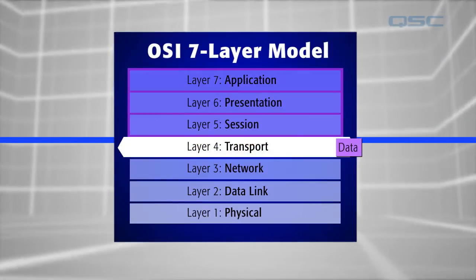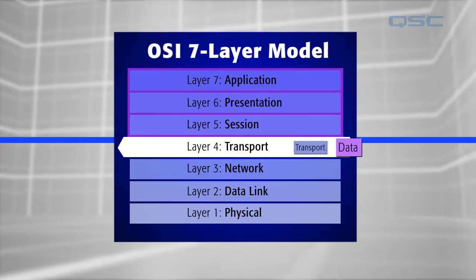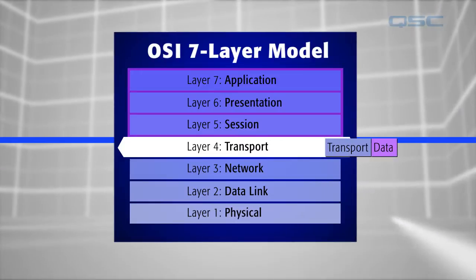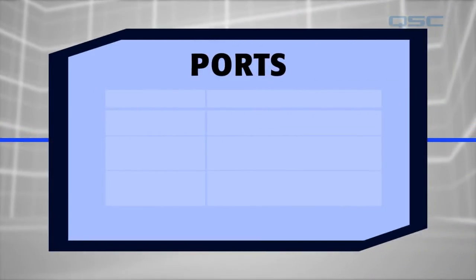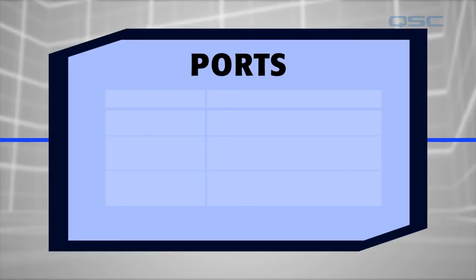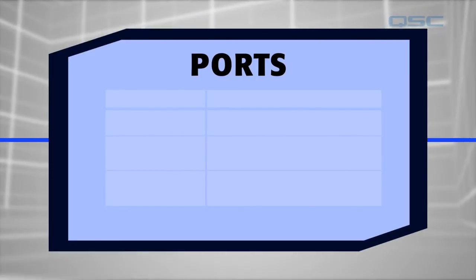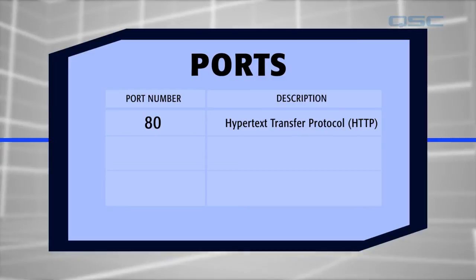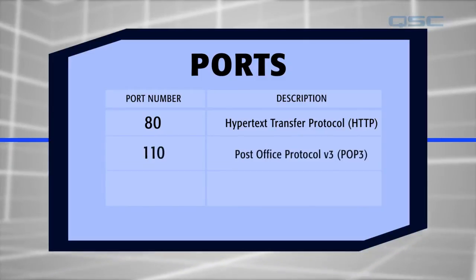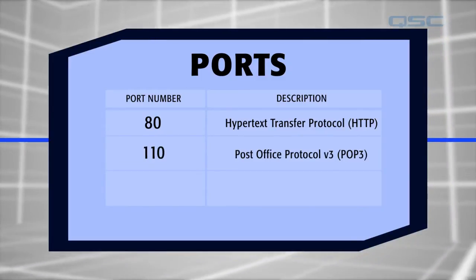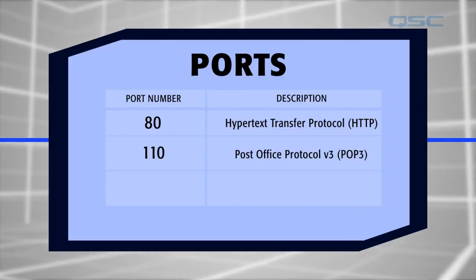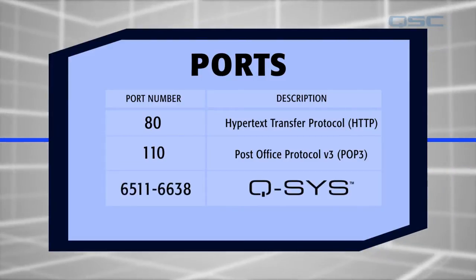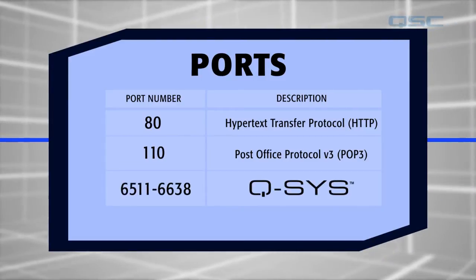Layer 4 adds a layer of transport information to your data, which will identify what type of data it is, and this is done using ports. Different ports are used for different types of information. For instance, HTTP web traffic uses port 80, and a POP3 email server uses port 110. Q-SYS audio uses ports 6511 through 6638.